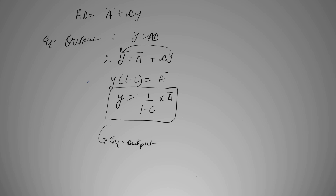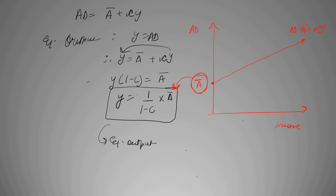In case you are not able to relate to it, you can simply understand it from the graph. This was our income, this was our AD, and this was our AD curve. We had our intercept a-bar over here, and this curve is called AD which is a plus cy. So this 'a', which is the intercept, is represented here, and the slope of this curve is represented by the MPC. To properly draw the graph, you need its slope and intercept, and those two things are represented in the equation.